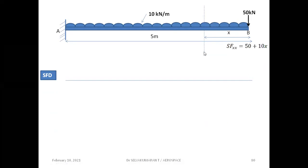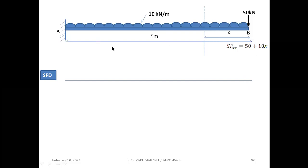To write the shear force expression about section XX, we have to remember the sign convention: right side of the section, downward is positive. 50 kilonewton is acting downward — positive — and UDL is acting downward, so 10 into x. So SF = 50 + 10x is the expression valid between A and B, between limits zero and 5 meters. At B, x is zero, so shear force at B is 50 kilonewton.